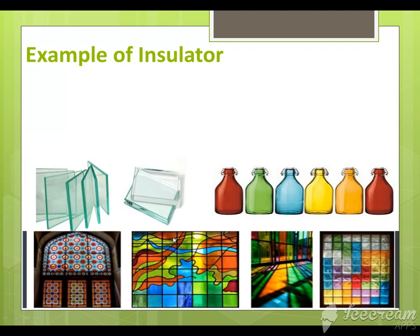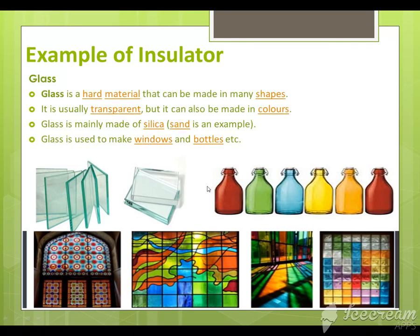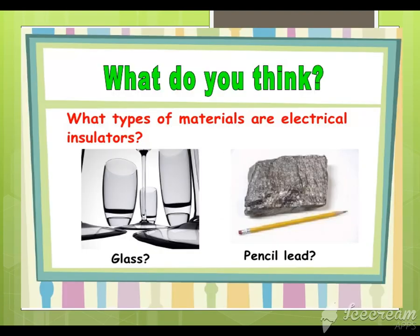Another example of an insulator is glass. Glass is a hard material that can be made in many shapes. It is usually transparent but can also be made in colors. Glass is mainly made of silica — sand is an example. Glass is used to make windows and bottles, which may be colored or colorless.